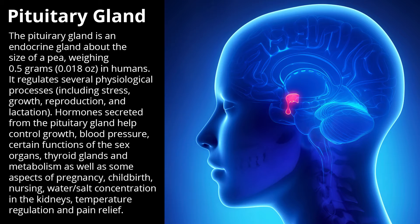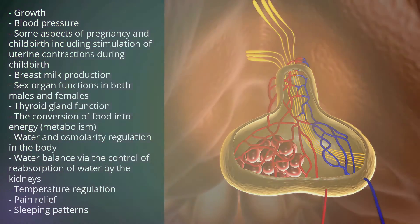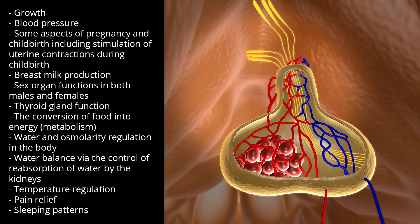Associated functions include aspects of pregnancy and childbirth, including stimulation of uterine contractions during childbirth, breast milk production, sex organ functions in both males and females, thyroid gland function, the conversion of food into energy, metabolism, water and osmolarity regulation in the body, water balance via the control of reabsorption of water by the kidneys, temperature regulation, and pain relief.